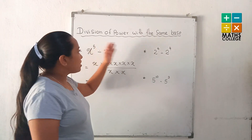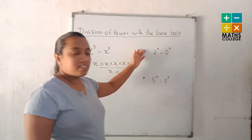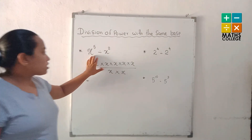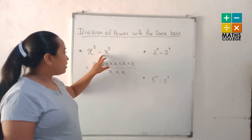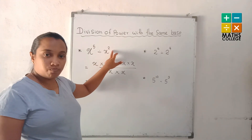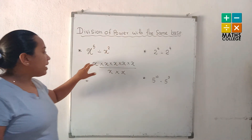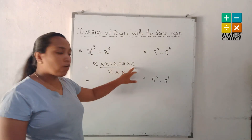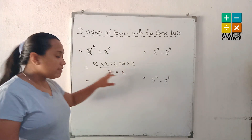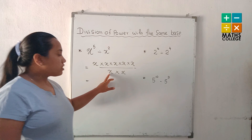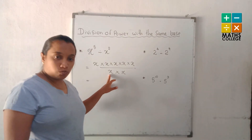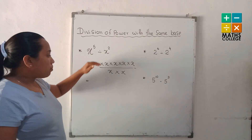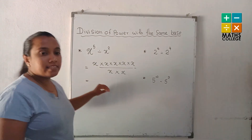What is the division of powers with the same basis? Here, x to the power 5 divided by x to the power 2. When I expanded it, there are 1, 2, 3, 4, 5 x's here, divided by x to the power 2, which is 2 x's here. The top and the bottom terms can be cancelled.